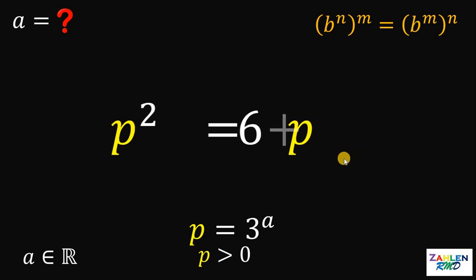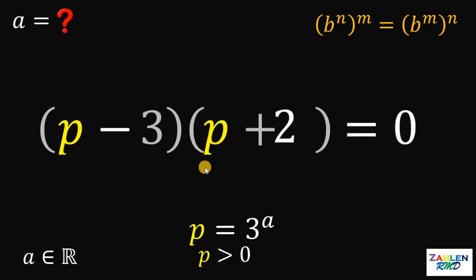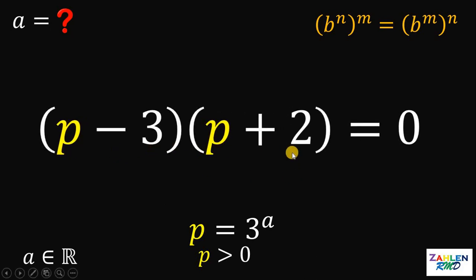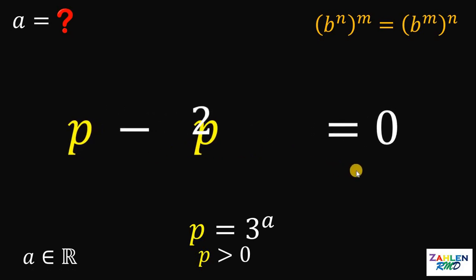First thing to do is to equate this to 0. p squared minus p minus 6 is factorable and this can be factored as p minus 3 times p plus 2. If we distribute this or multiply using FOIL method or any method that we know, this will give us p squared minus p minus 6.